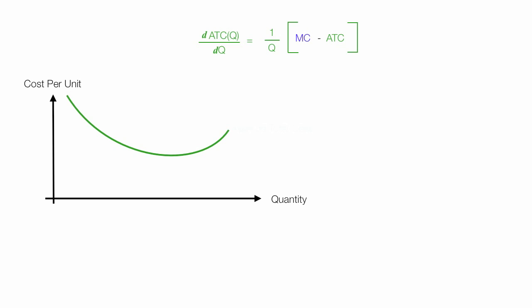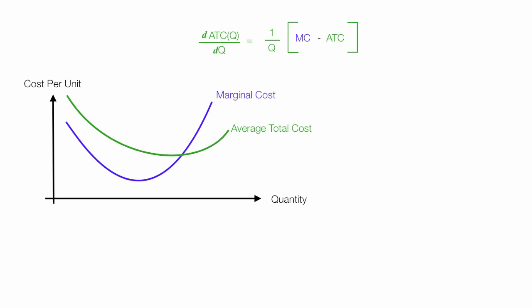So now I have the average total cost curve, and I want to show how it changes when quantity changes. The right-hand side of that equal sign is my first derivative: 1 over Q times (marginal cost minus average total cost). I'll put the marginal cost curve back in and draw a table so you can follow. In this part of the graph, marginal cost is less than average total cost — the slope, marginal cost minus average total cost, is negative — and average total cost is decreasing in this area.